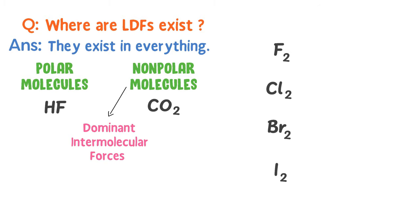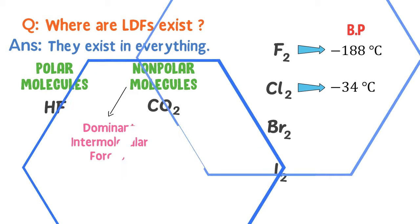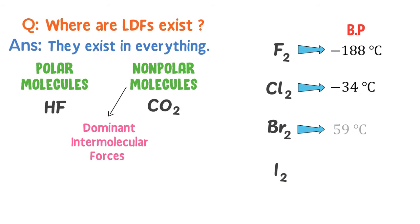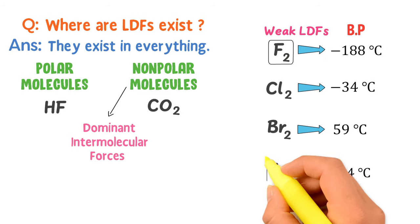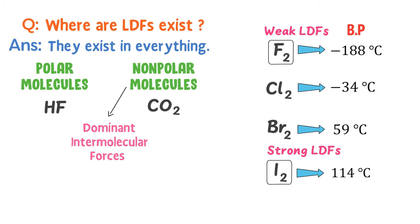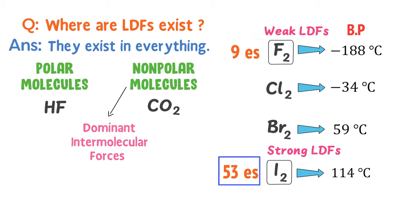The boiling point of fluorine gas is minus 188 degrees Celsius. The boiling point of chlorine gas is minus 34 degrees Celsius. The boiling point of bromine is 59 degrees Celsius, and the boiling point of iodine is 114 degrees Celsius. All these halogens contain London dispersion forces — then why do they have different boiling points? It is because fluorine contains weak London dispersion forces and iodine contains strong London dispersion forces. There are 9 electrons in a fluorine atom while there are 53 electrons in an iodine atom. Less electrons mean weak London dispersion forces, and more electrons mean strong London dispersion forces.